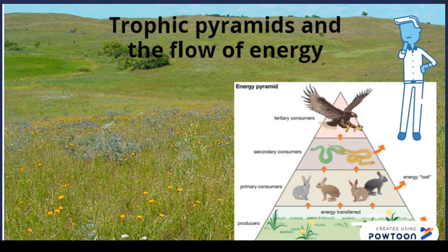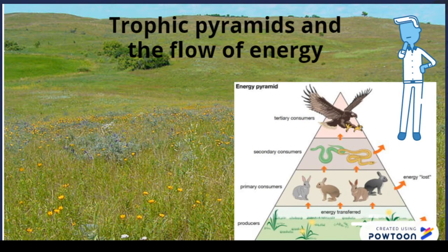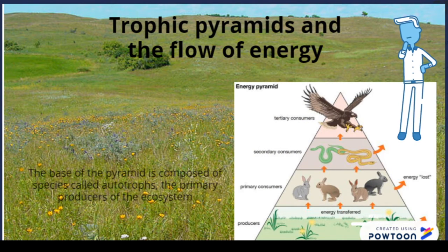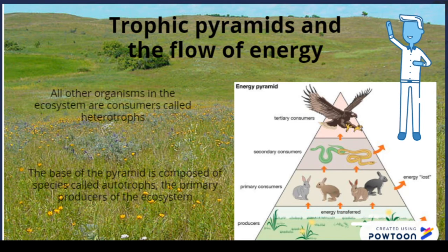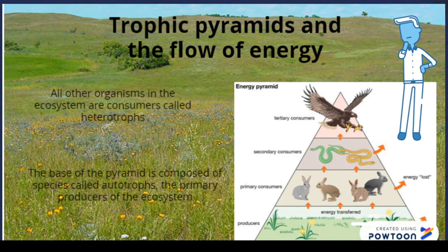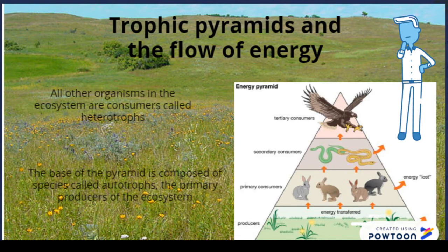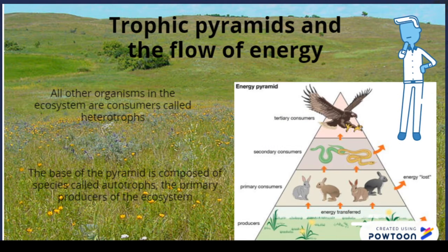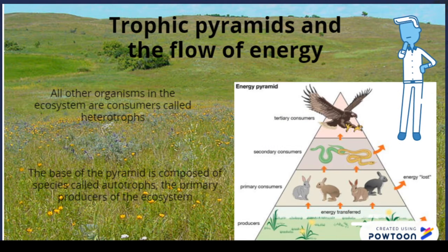We can also see this interaction with the trophic pyramids and the flow of energy. From here, you can see that the producers, which represent plant life, are the ones that begin with the most energy in the pyramid, and this energy starts spreading out throughout all of the predators that can be found in this environment.